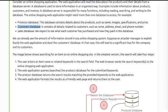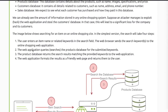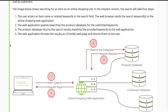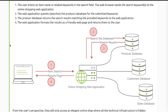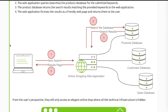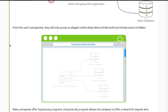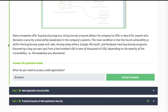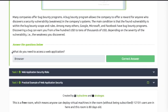We can already see the amount of information stored in any online shopping system. Suppose an attacker manages to exploit the web application and steal the customers database. In the simplest version, the search takes four steps: the user enters an item name or keywords in the search field, the web application queries the product database, the database returns results, and the web application formats them as a friendly web page. Some companies offer bug bounty programs. The answer to what you need to access a web application is: a browser.